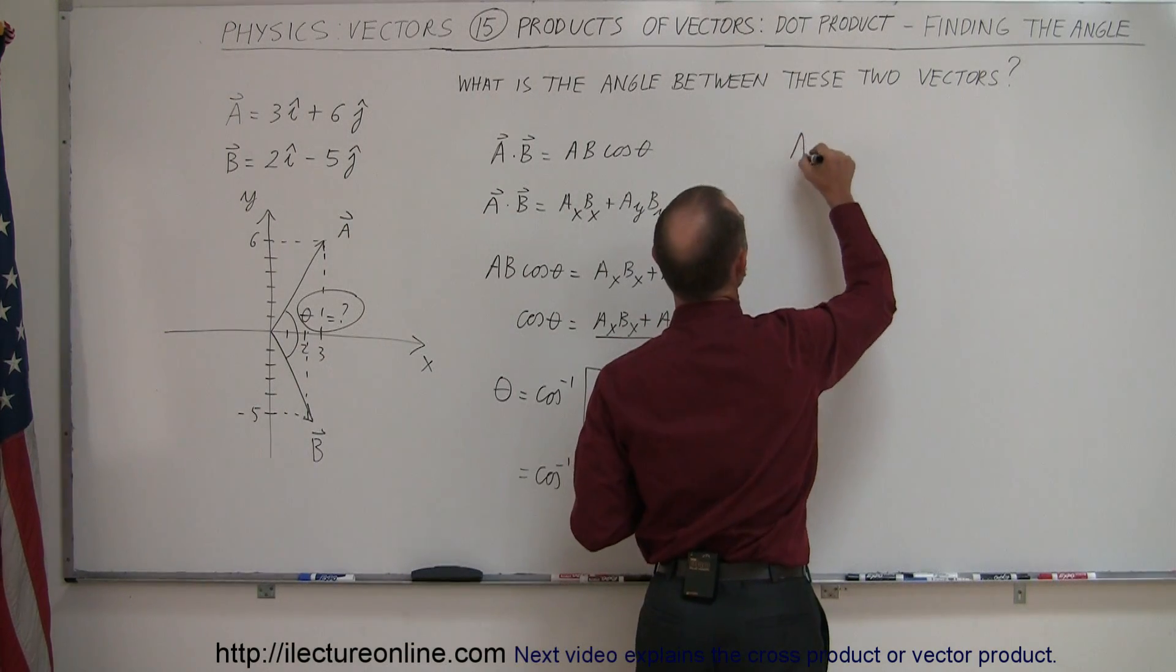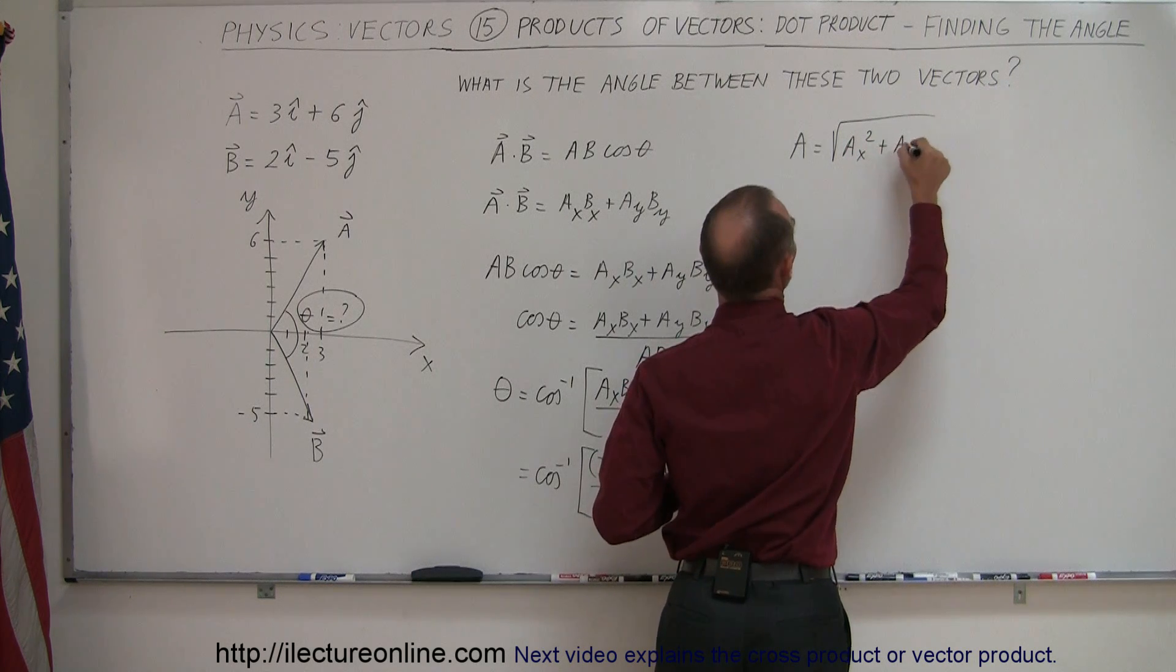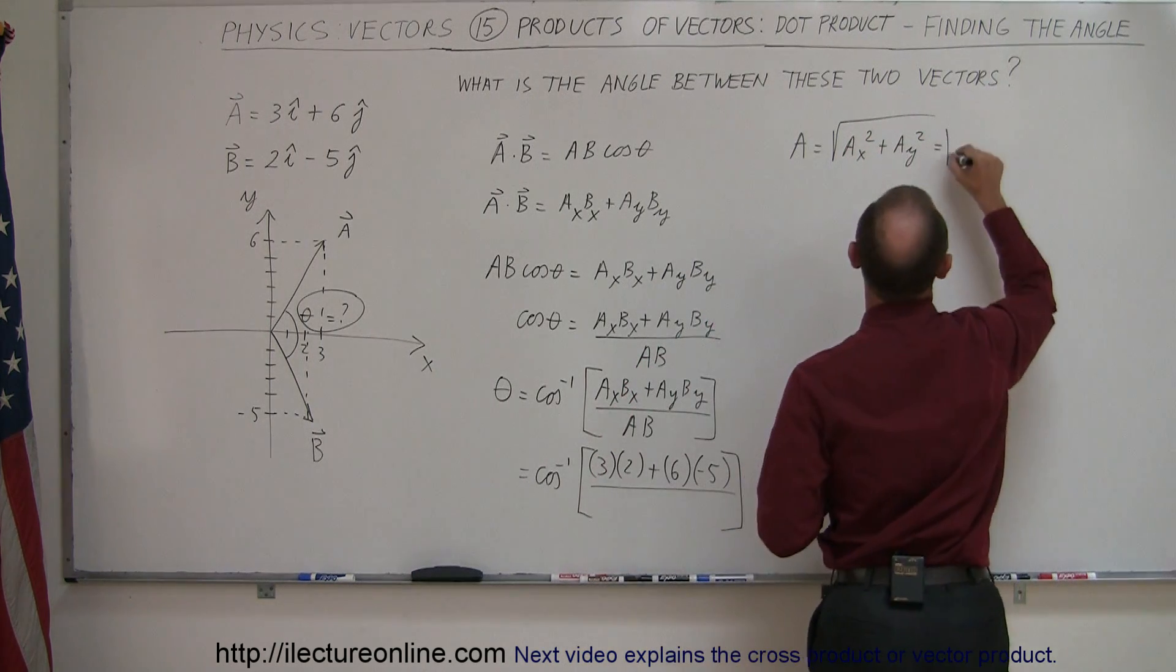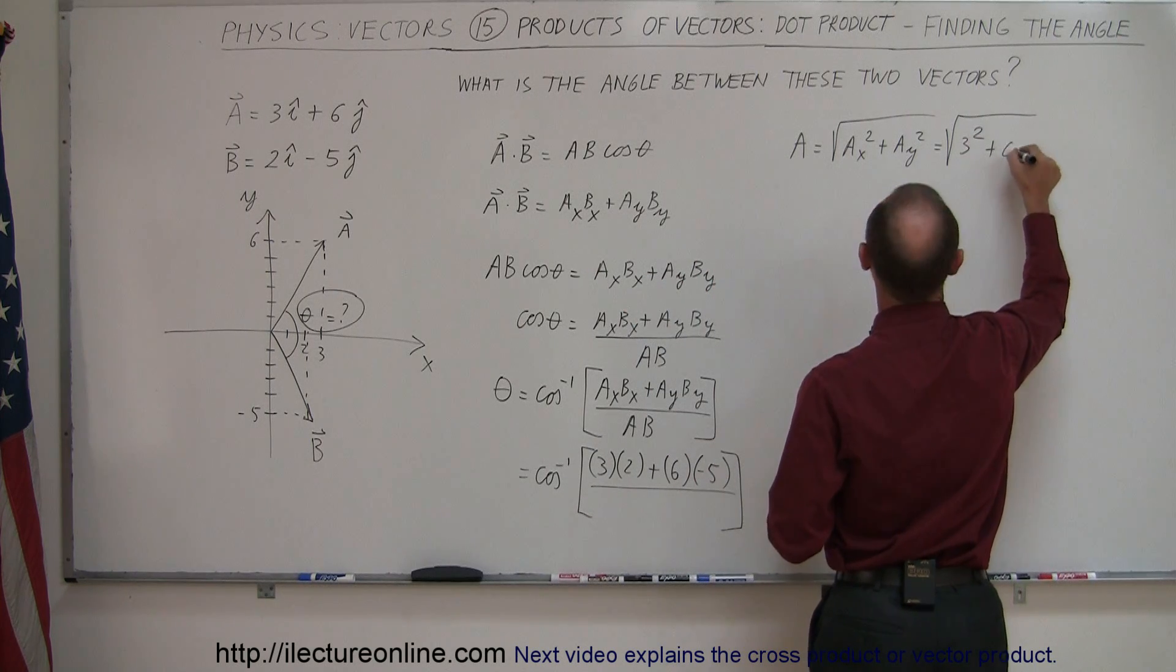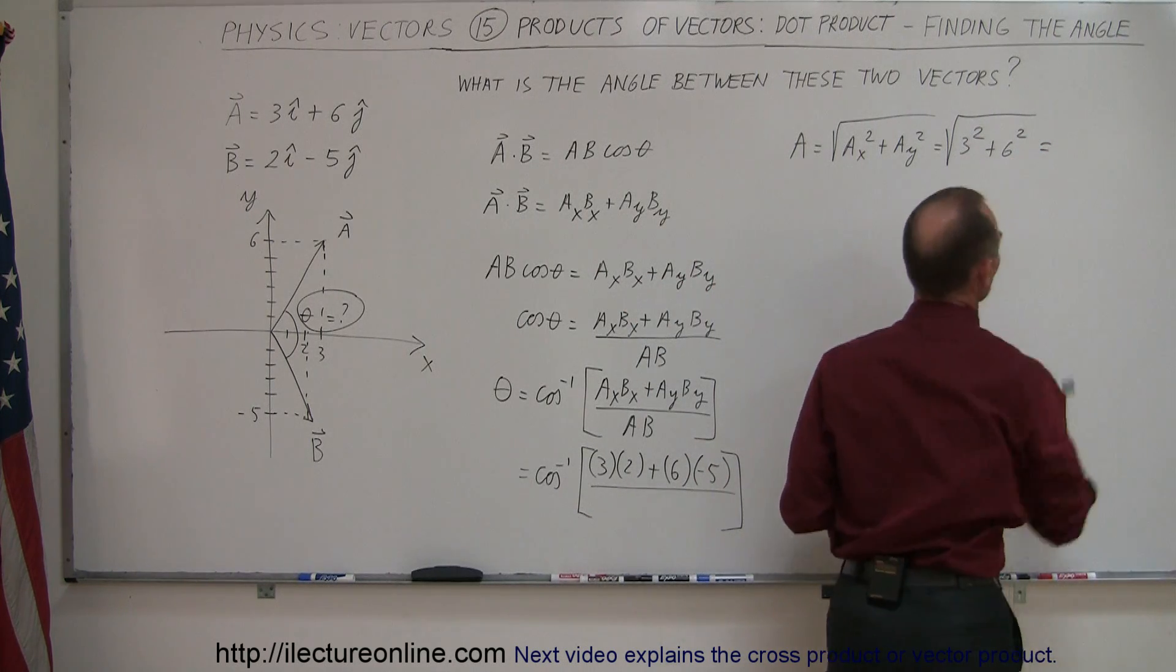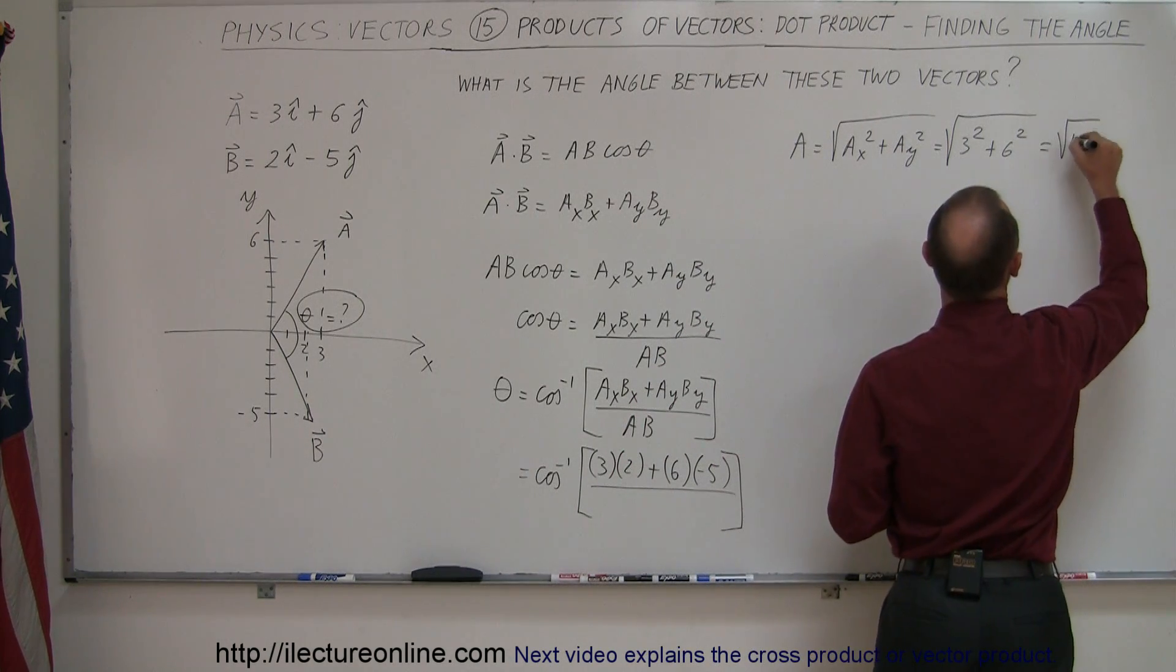We say that the magnitude of A is equal to the square root of AX squared plus AY squared. So in this case, that's the square root of, looks like 3 squared plus 6 squared. 6 squared is 36, 3 squared is 9, 36 and 9 is 45, that would be the square root of 45.